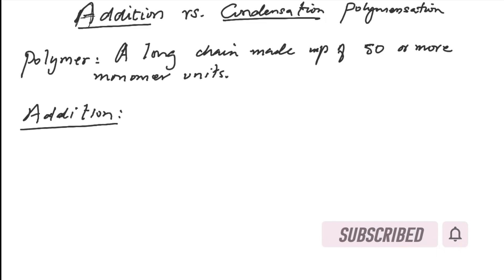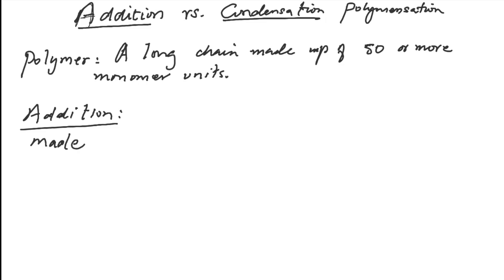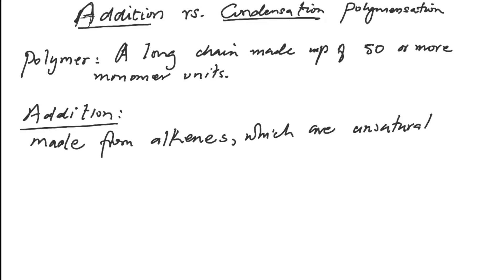We'll use ethene as an example. Addition polymers are made from alkenes, which are unsaturated, meaning they have the carbon-carbon double bond. We always look out for this carbon-carbon double bond in the monomer units. Whenever the polymer product is formed, we only get one product.